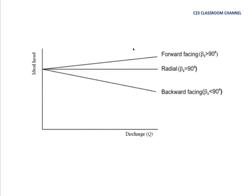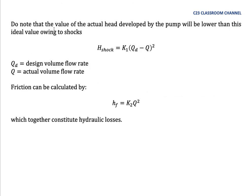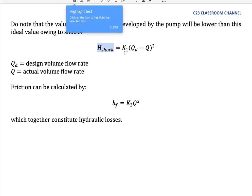Do note that the value of the actual head developed by the pump will be lower than this ideal value owing to shock, which means the theoretical head and the actual head will be different. The actual head will be lower compared to the theoretical head because there is resistance or losses. The losses we call h_shock equals k1 times (Q_d minus Q) squared, where Q_d is the theoretical volume flow rate, Q is the actual volume flow rate, and k1 is the resistance coefficient.